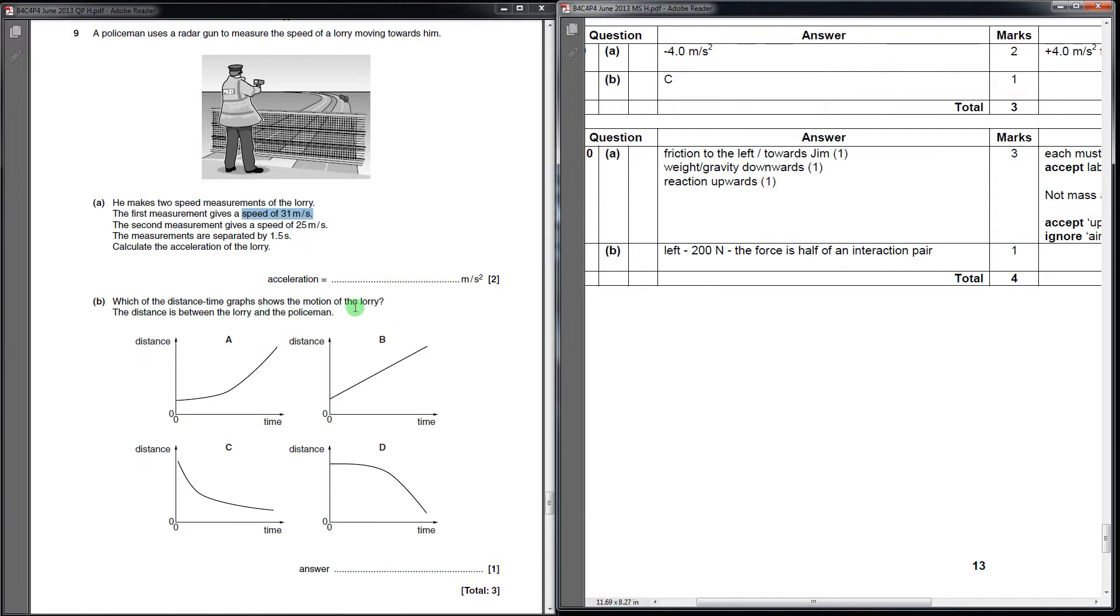Which of the distance time graphs shows the motion of the lorry? The distance is between the lorry and the policeman. Here is a bit of a debate about whether or not they should label this as distance time graph, because technically it's a displacement time graph. But they have given us enough information to answer the question correctly anyway.